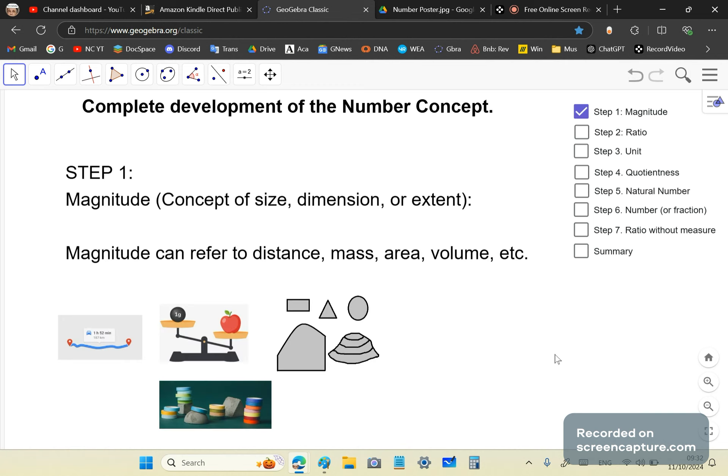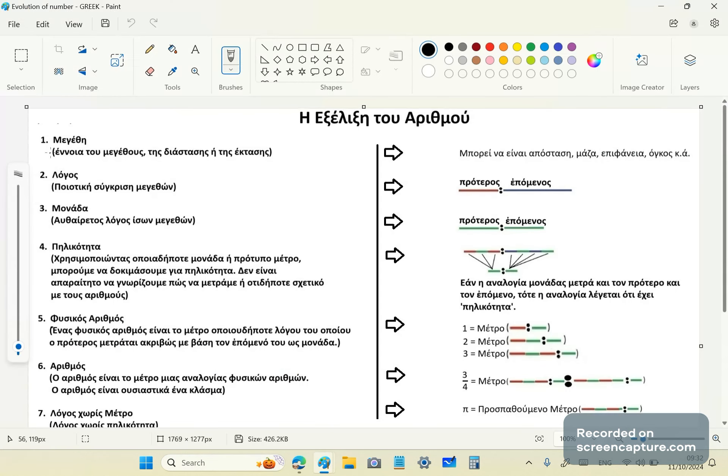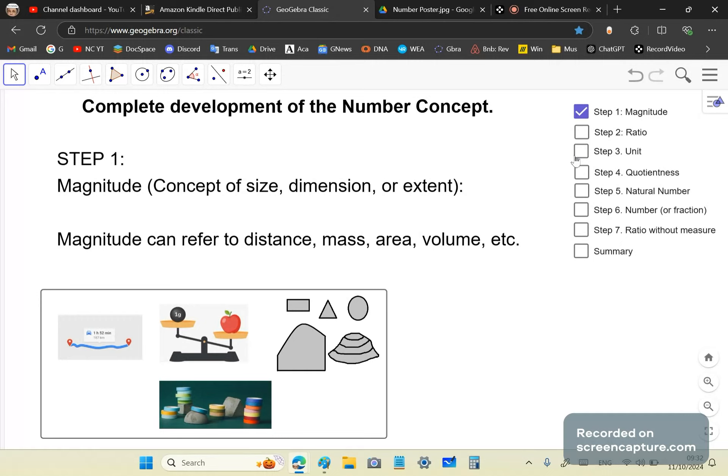Step one is basically just the concept of size, dimension, or extent, and we call this magnitude. A magnitude can refer to distance or mass, or area, surface area, plane area, or even volume, any kind of volume. In Greek, we call a magnitude maithos, or the plural is magnitudes. We'll be referring to this back and forth because this is where all these concepts came from. That's the first step.